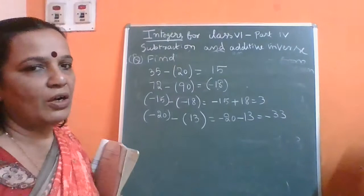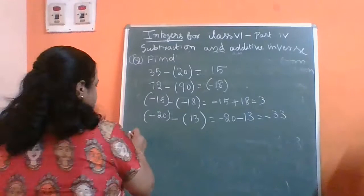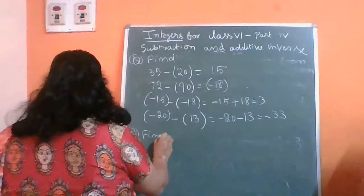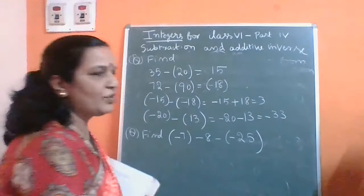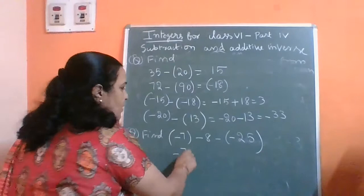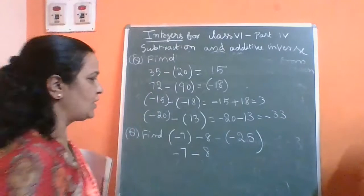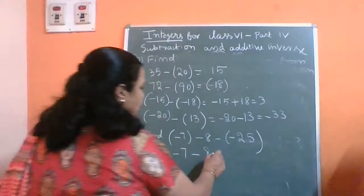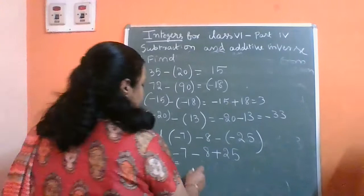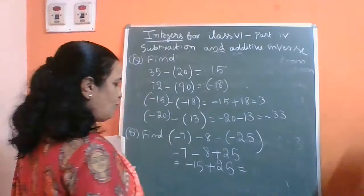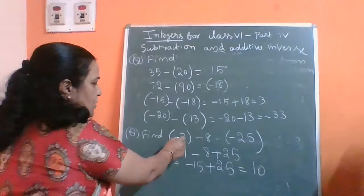The next question consists of more integers: minus 7 minus 8 and then minus of minus 25. Write minus 7 as it is, minus 8 also as it is, and minus of minus 25 becomes plus 25 — you are writing the additive inverse. Therefore it is minus 7 minus 8 plus 25: minus 15 plus 25 equals plus 10.